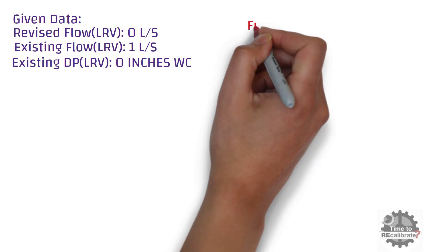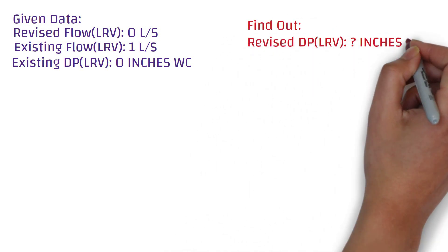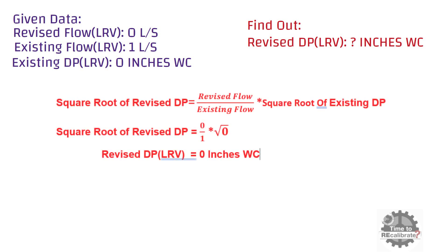The existing differential pressure lower range value is 0 inches of water column. From these given data, we need to calculate the revised lower range value of differential pressure — the new lower range value for the new flow range. Put all given values into the standard calculation formula and do the simple math. You will get 0 inches water column of differential pressure.